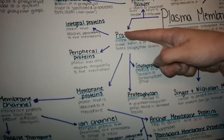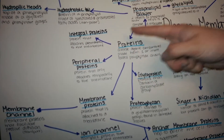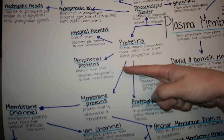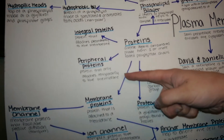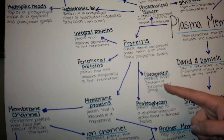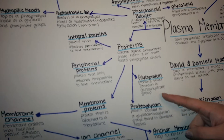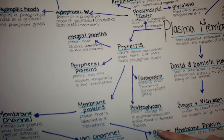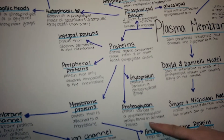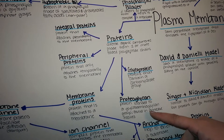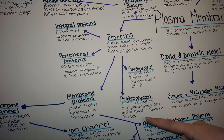Integral proteins are proteins that can attach permanently to the membrane, whereas peripheral proteins are proteins that can only attach temporarily to the phospholipid bilayer. Glycoproteins are proteins that contain a carbohydrate group, whereas proteoglycans are proteins that are bonded to a glycan group formed by connective tissue.